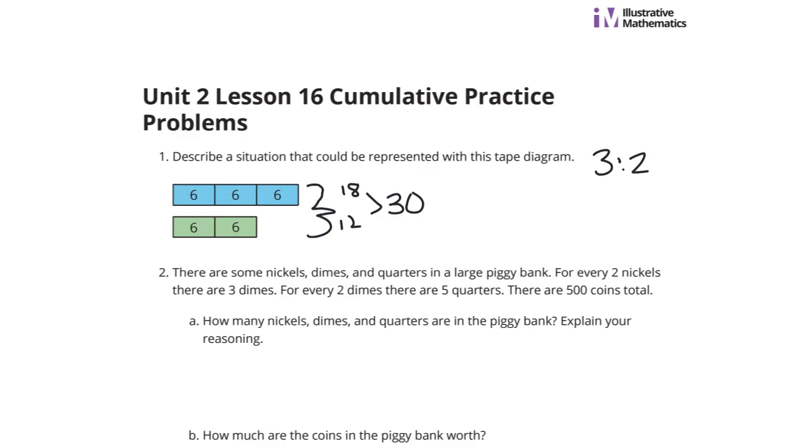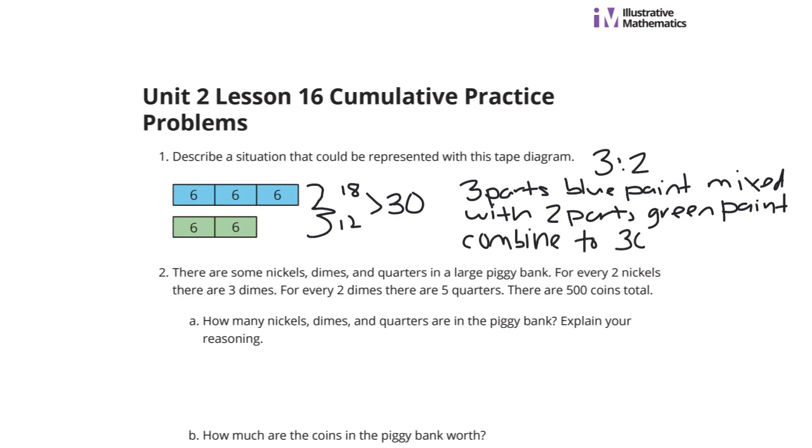So what could this represent? How about 3 parts blue paint mixed with 2 parts green paint combine to 30 cups of yellow paint? And of course, you could solve and figure out exactly how many cups of blue and how many cups of green there would be.